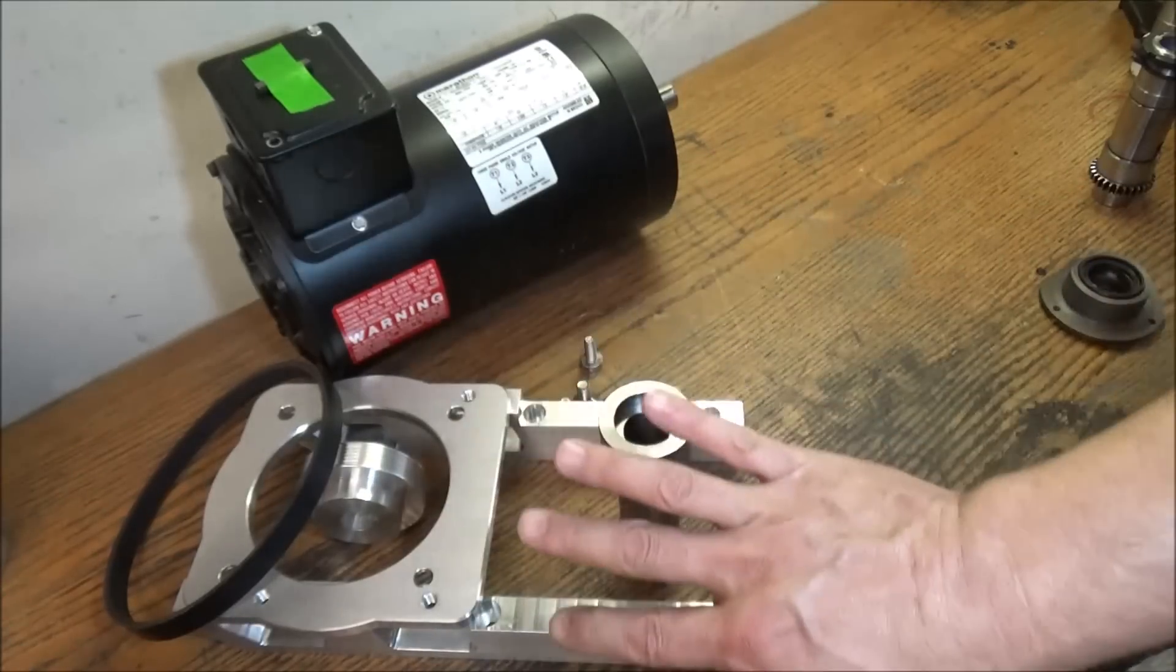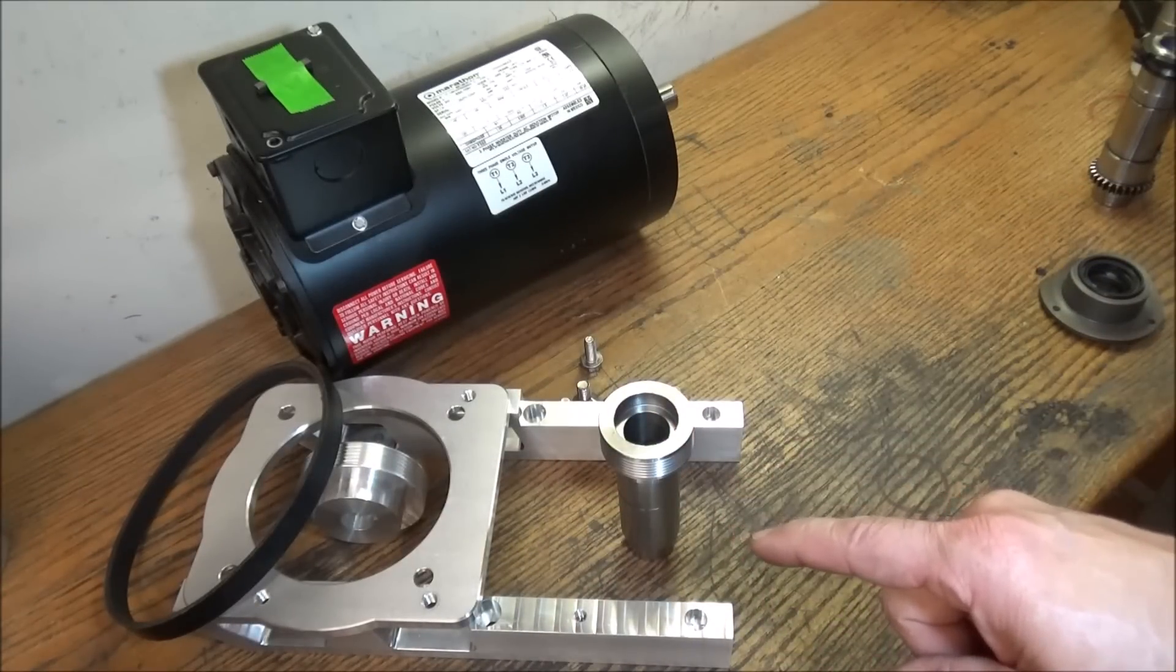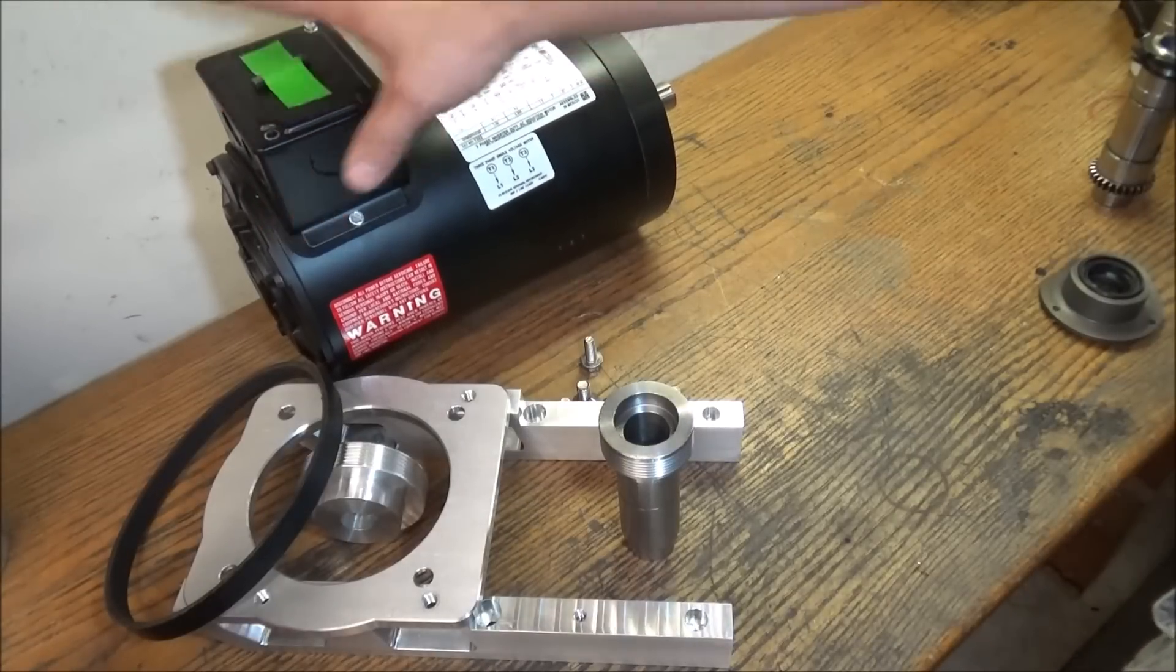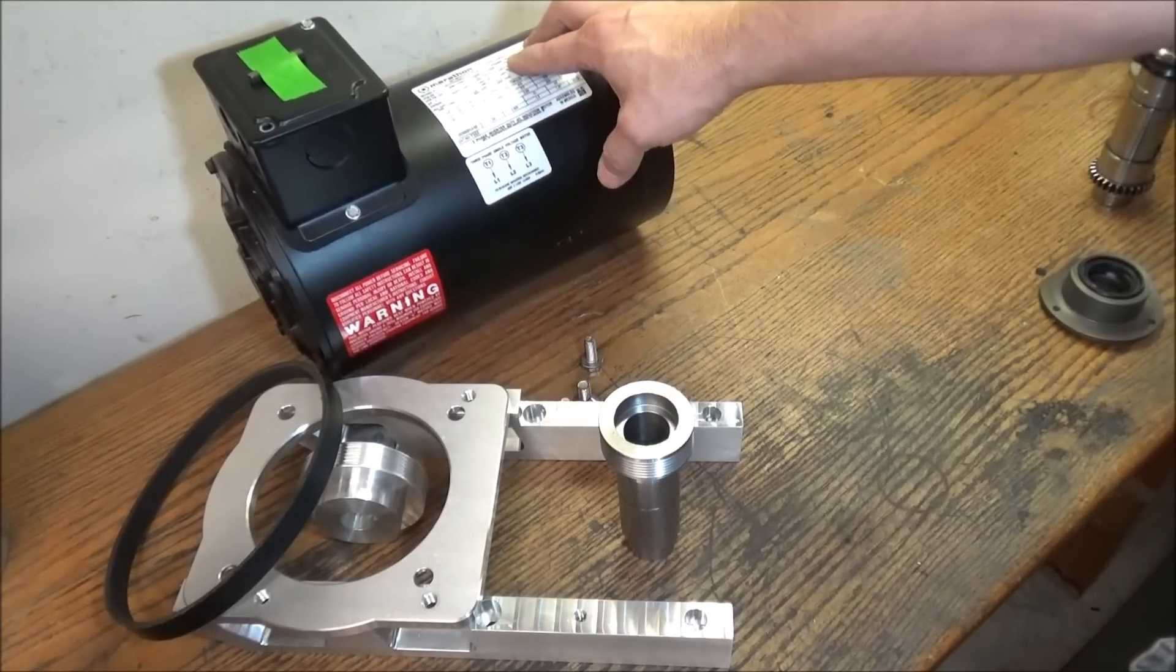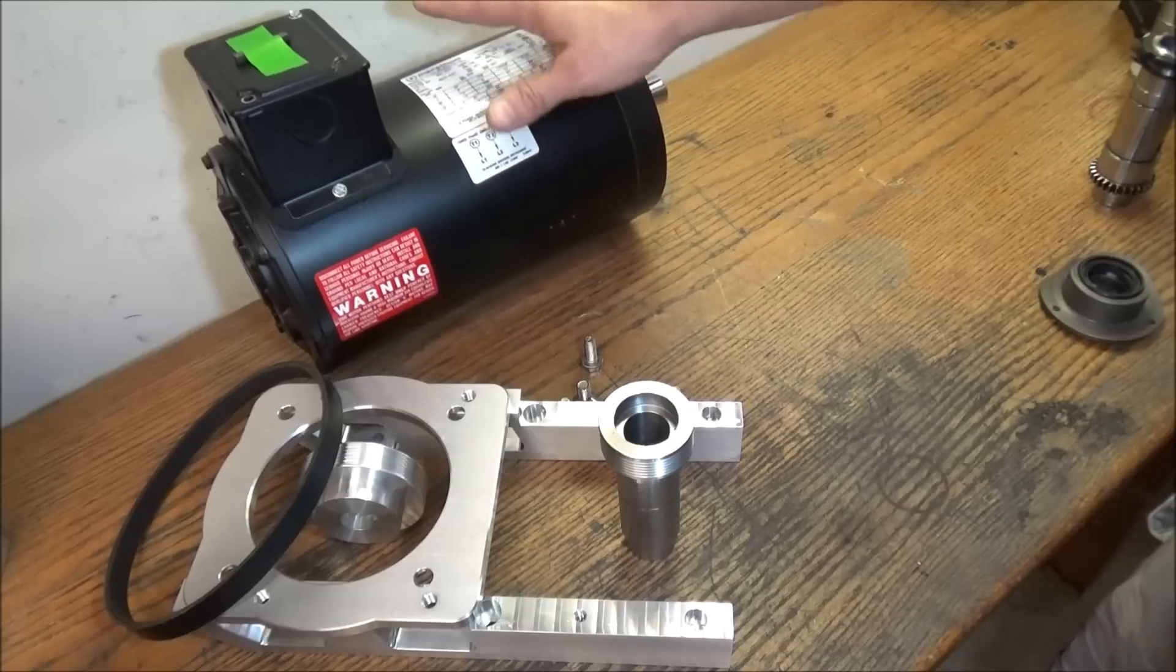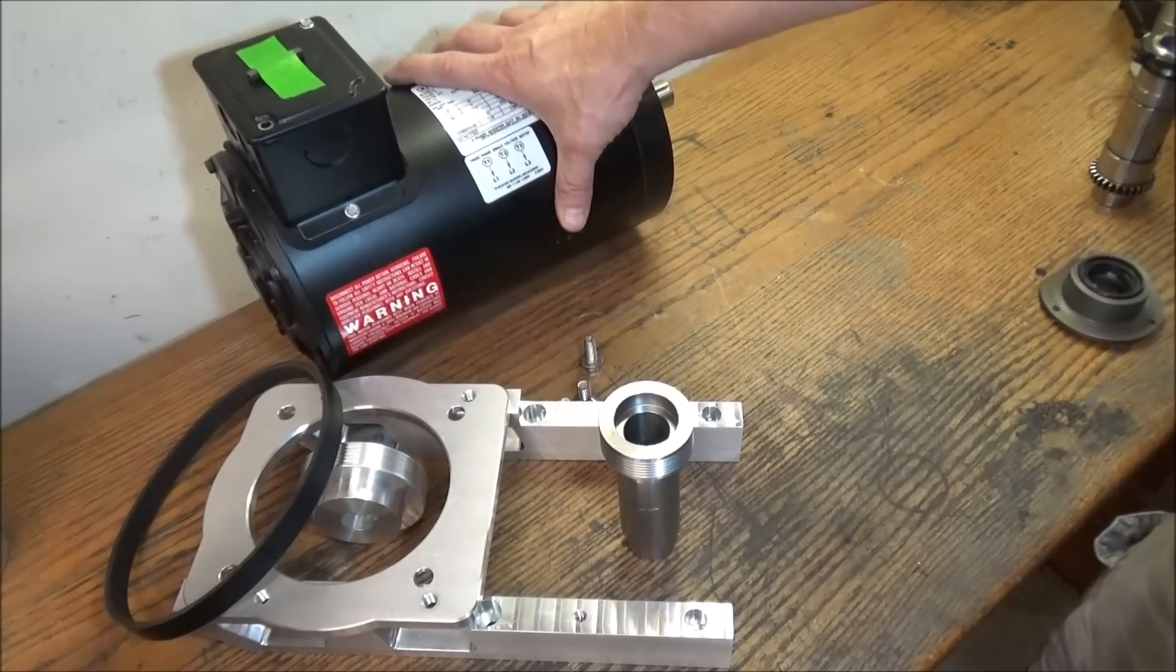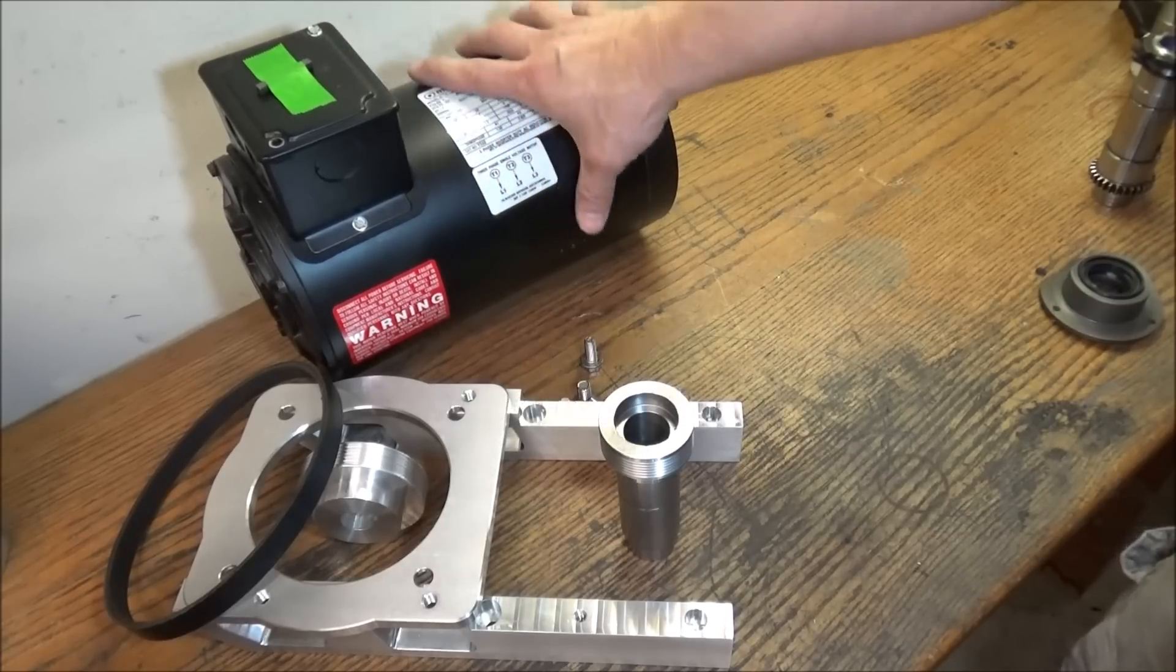So this particular belt drive is going to be for my linear rail conversion and it's going to be paired up with the Marathon Micromax motor. Now this motor is a 145 TC framed motor. It's a four pole motor. A horse and a half.